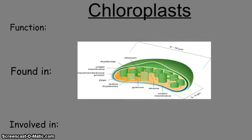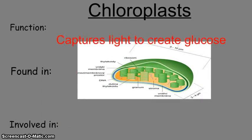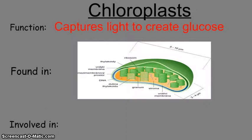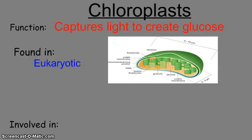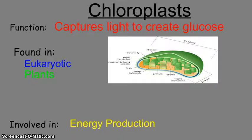The chloroplast is another energy-producing organelle. Its function is to capture sunlight and create glucose, which is our molecule of energy. It is found in eukaryotic cells, and since it's a sunlight-capturing organelle, it's found only in plants. It's green because of the chlorophyll inside, which attracts the correct wavelength of energy. Chloroplasts are involved in energy production, unlike mitochondria which are found in both plants and animals.